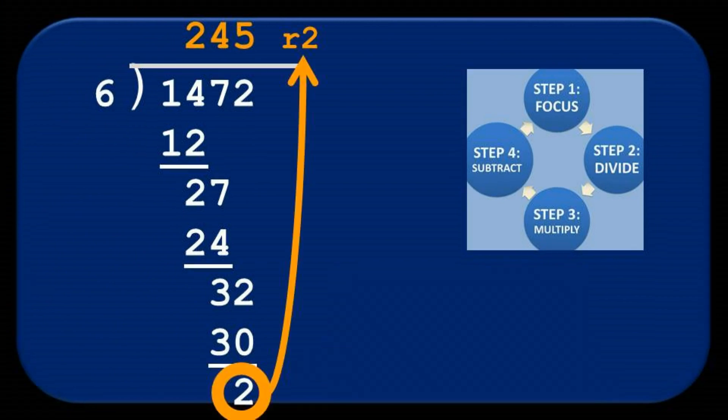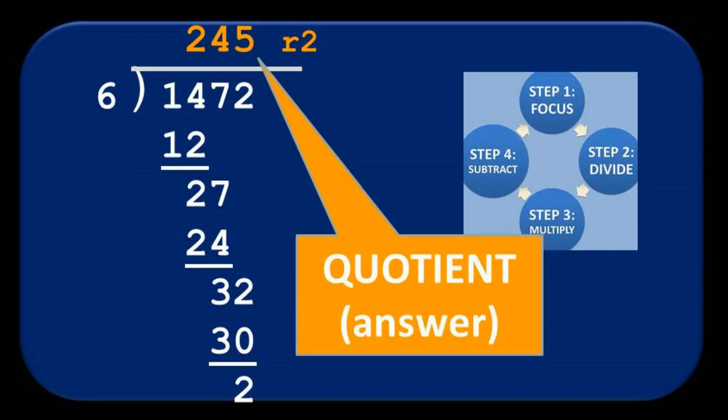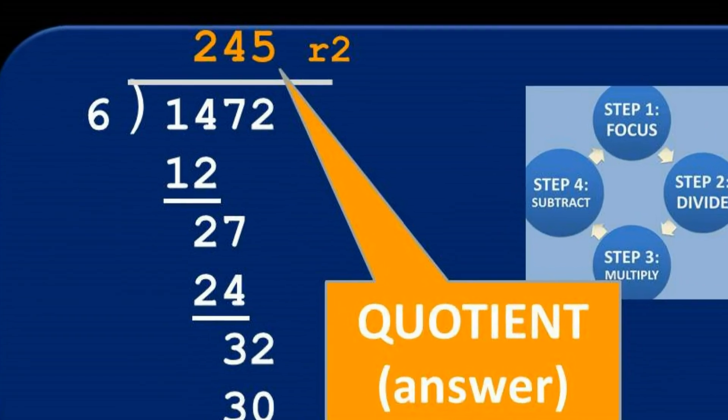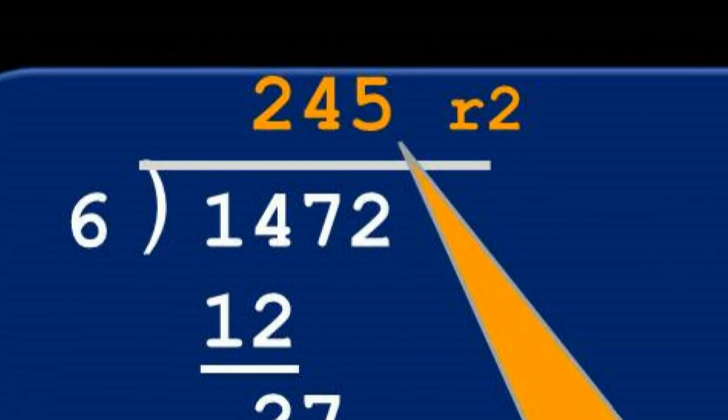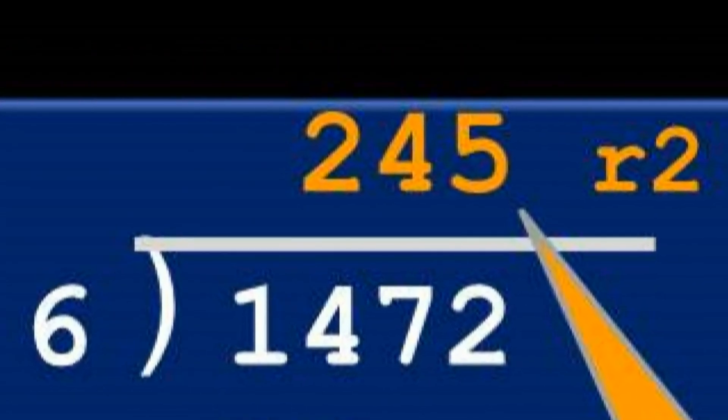So, our solution, our quotient, for 1472 divided by 6 is 245, with a remainder of 2.